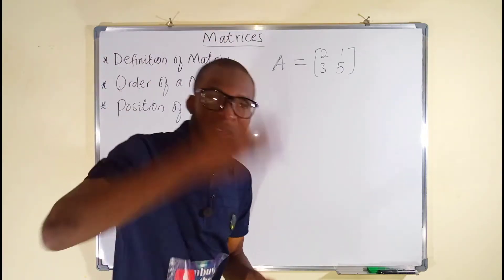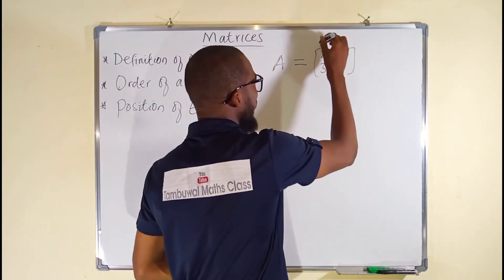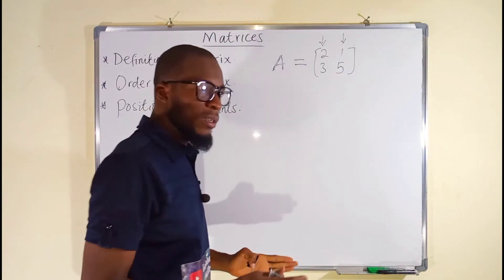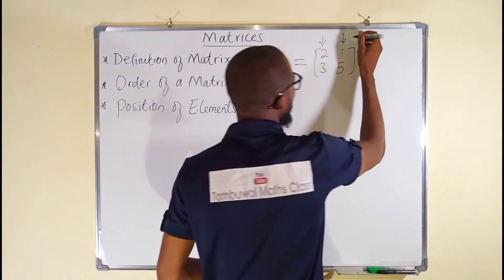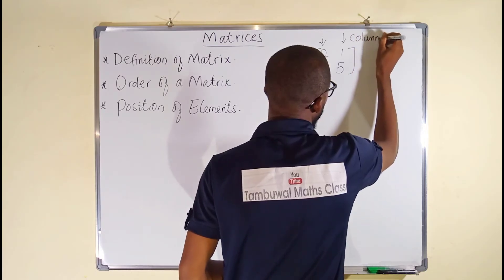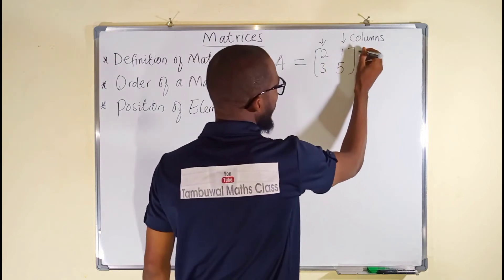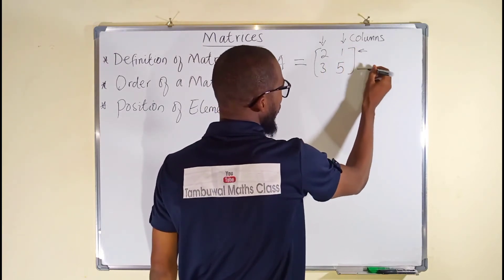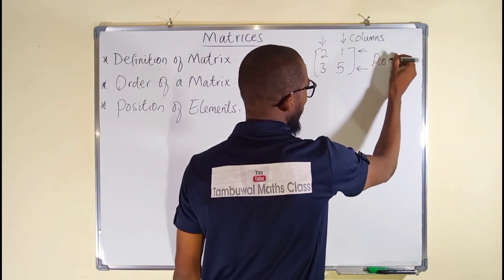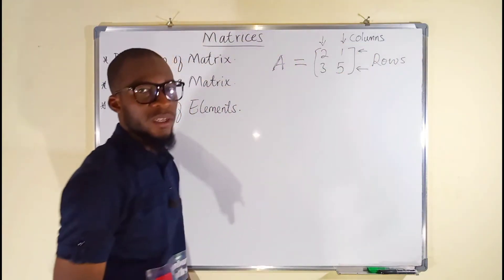The vertical arrangement of elements is said to be the columns. We have two columns. The horizontal arrangement is said to be the rows. So we have two rows and two columns in this particular matrix.